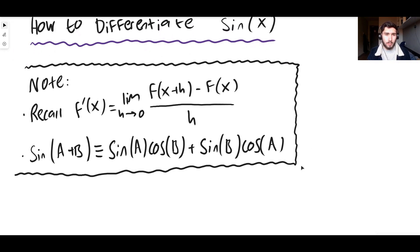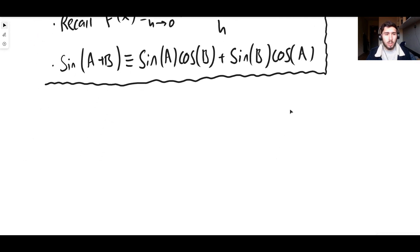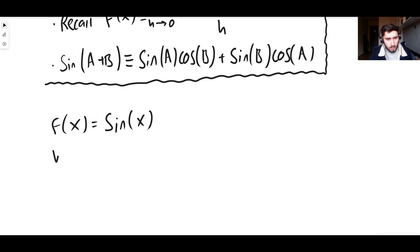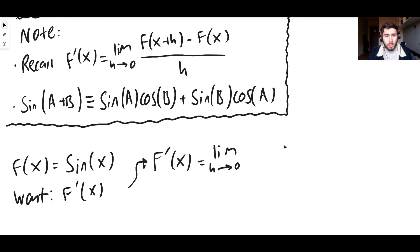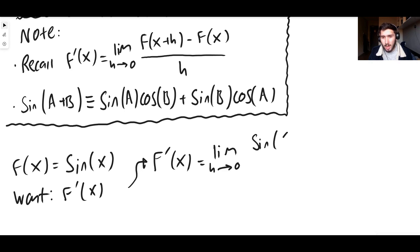Now, without further ado, let's get into it. So we want to differentiate sine x. We can use the formula for differentiating a function. So if we say that f of x is going to be sine x, what we want is f prime of x — that's literally what we're looking for. So f prime of x, using the definition of differentiation, is equal to the limit as h approaches 0 of f of x plus h, where f of x is sine x. So wherever you see an x, replace it with x plus h. So sine of x is going to become sine of x plus h, like this.